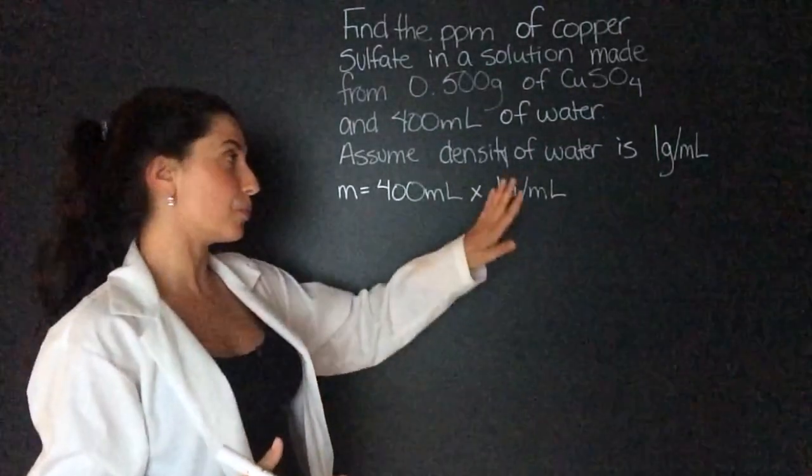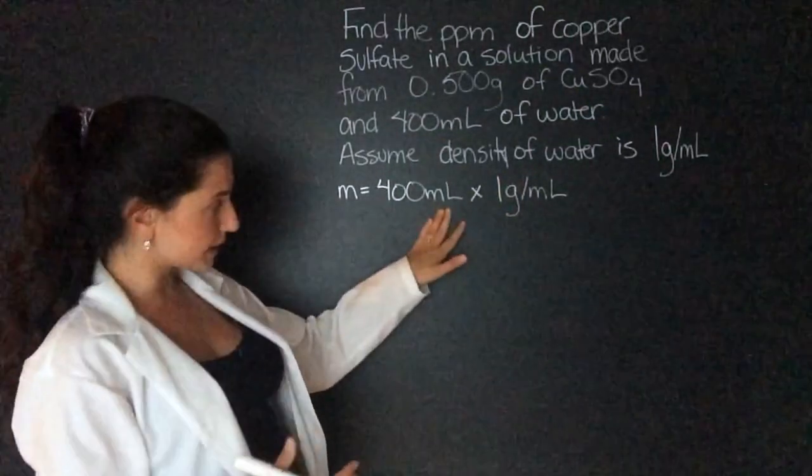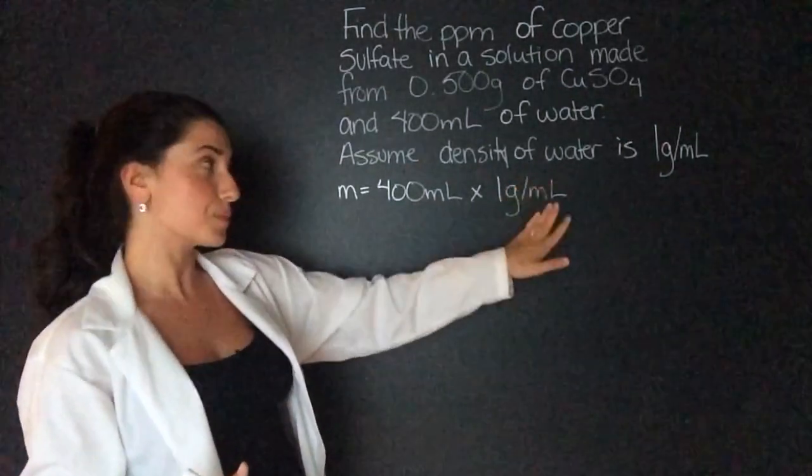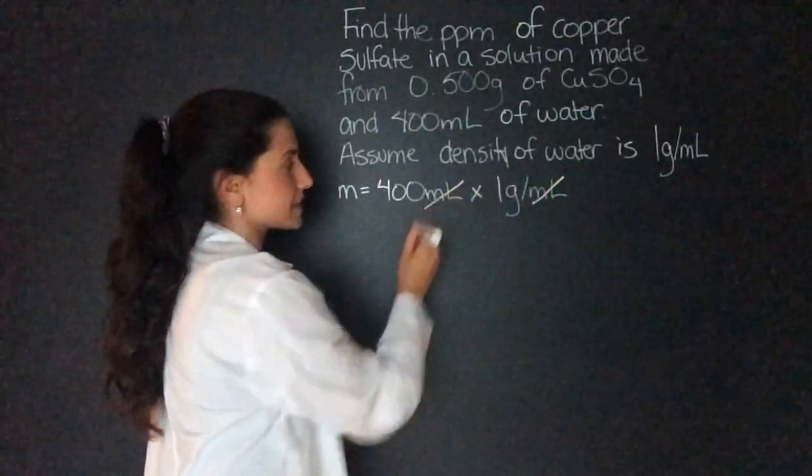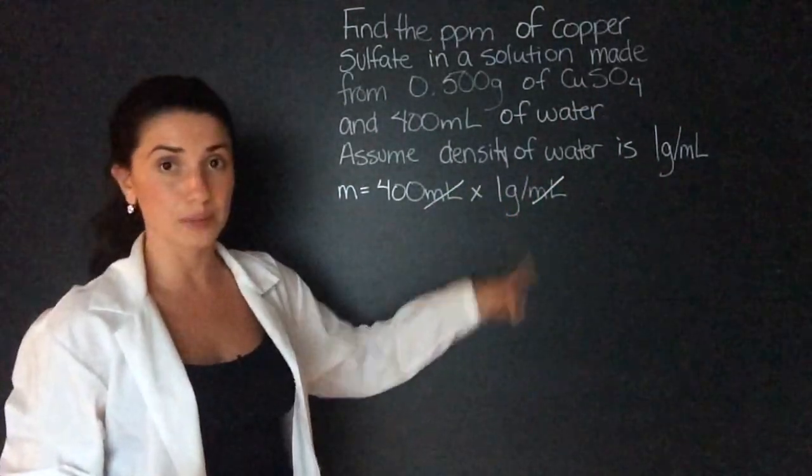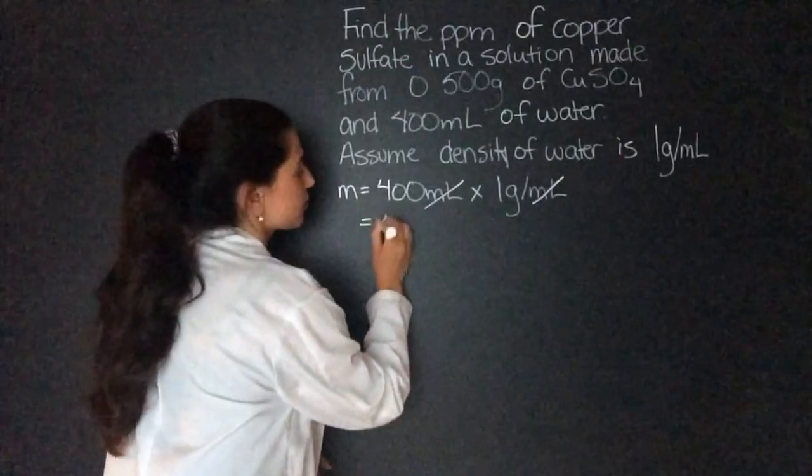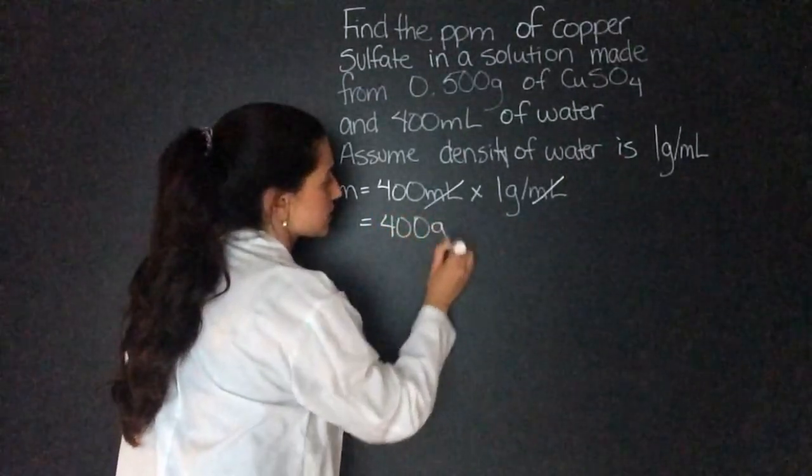I know that I want to end up with grams. So if I have milliliters here and then grams per milliliter here, I know that if I multiply them the milliliters will cancel out and I'll be left with grams. So that leaves me with 400 grams for the water.